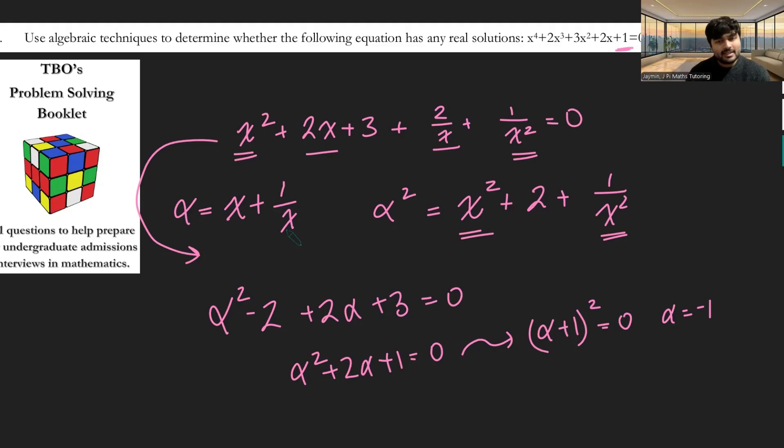But if we just look at this here, x plus 1 over x equals minus 1. If we multiply through by x and rearrange, we get x squared minus x plus 1 equals 0. This is a quadratic, but if we look at its discriminant, it's b squared minus 4ac, so minus 1 squared minus 4 times 1 times 1, which is minus 3, which is a negative number. And so therefore this has no real solutions for x, and therefore no real solutions to this original quartic here.